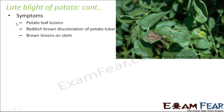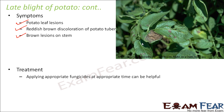Symptoms include leaf lesions, reddish-brown discoloration of the potato tuber — the part we eat — and brown lesions on stems. For treatment, applying appropriate fungicides at the appropriate time can be helpful since this is also caused by a fungus-like organism.